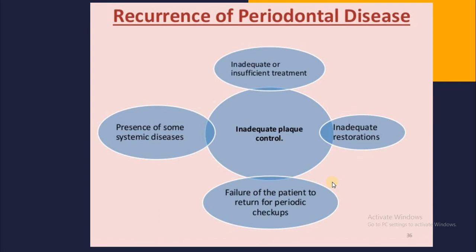One of the important goals of the maintenance phase is to prevent recurrence of disease and stabilize or control the patient. However, we should know that recurrence of periodontal disease is real. Causes include inadequate or insufficient treatment, inadequate plaque control, presence of systemic disease predisposing to periodontal disease, inadequate restorations, or failure of the patient to return for periodic checkups.